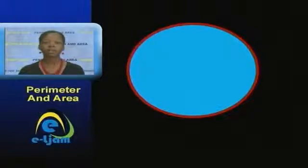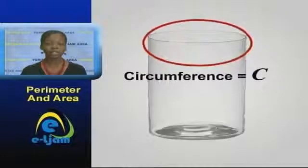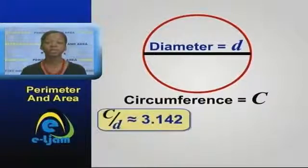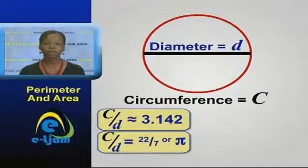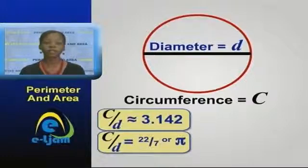There is a simple formula for determining the distance around any circular shape. If we were to measure the distance around a circular shape, such as a glass cylinder, and then measure its diameter and divide them, we would get approximately 3.142. In fact, if we did this for any circular shape, we would always obtain a value close to 3.142. This value is called pi and is a constant. So in all cases, the circumference of any circular figure divided by the diameter gives us pi.